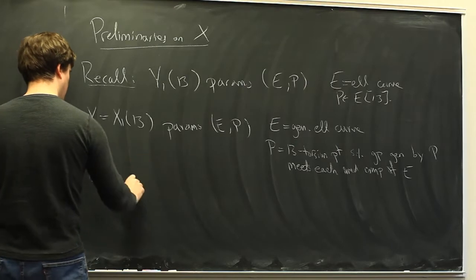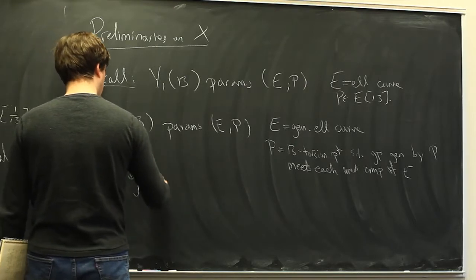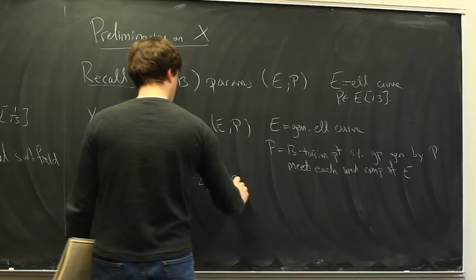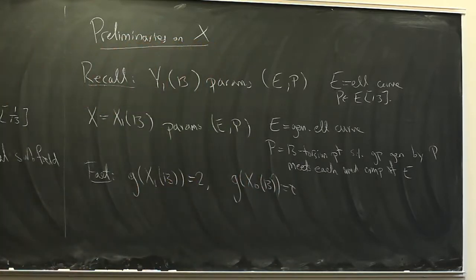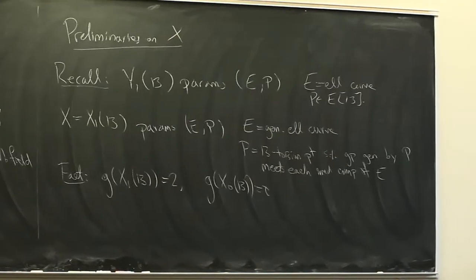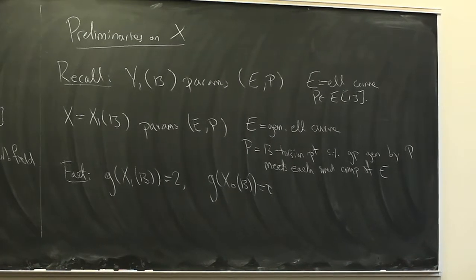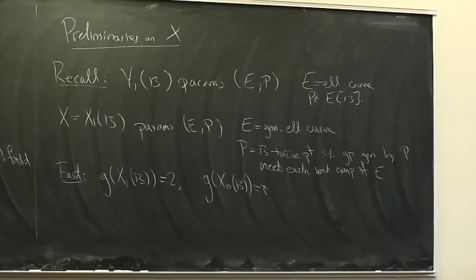You can compute by the genus formula that the genus of X₁(13) is 2. If the genus were 1, it would be an elliptic curve and there would be methods for getting at its rational points. Since it's a higher genus curve, it's harder — it doesn't map to an elliptic curve either. So you have to deal with X₁(13) directly.